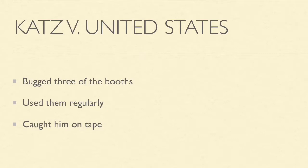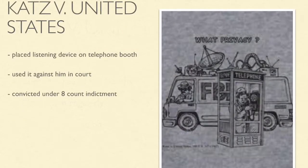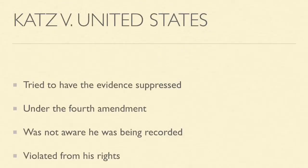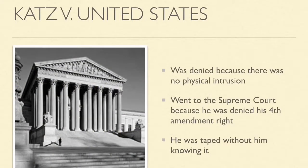The FBI had placed a listening device on top of the telephone booth and recorded his conversation so that they would be able to use it against him in court. Charles Katz was convicted under an eight-count indictment for illegally transmitting information over telephone lines. The petitioner tried to have the evidence suppressed under the Fourth Amendment because he was not aware that he was being recorded — it was a violation of his rights. This was denied because the court agreed with the FBI, stating that there was no physical intrusion in entering the telephone booth.